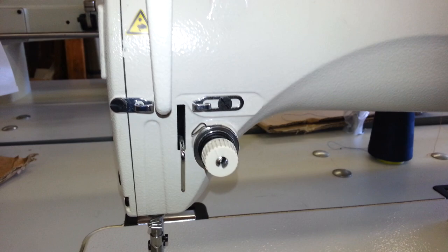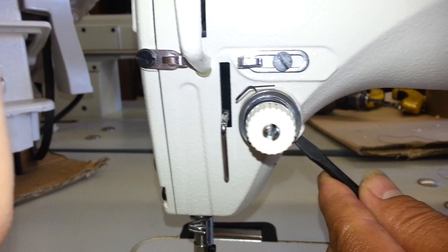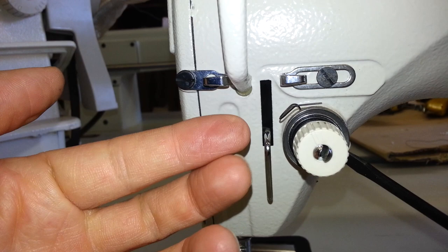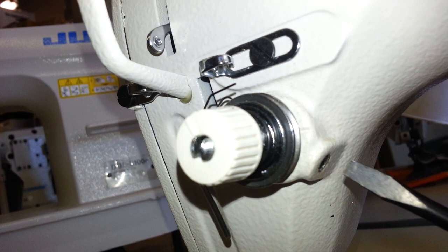We're going to show you how to take out the tension. Hold on one sec, Jose. Basically what happened with Malcolm's machine, the actual tension came out. There's two pieces here. We're going to take the entire tension out and Malcolm, you're going to want to do this.